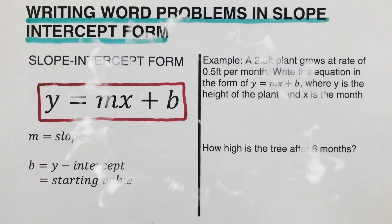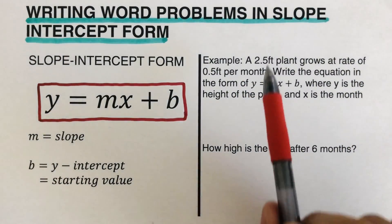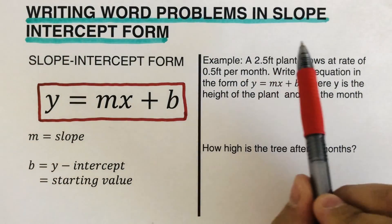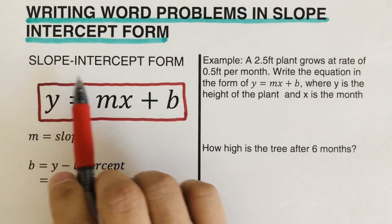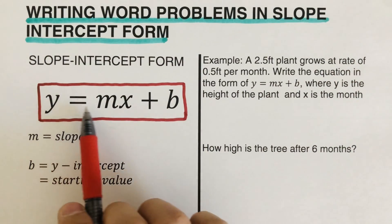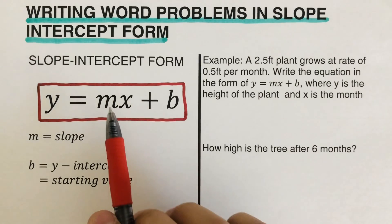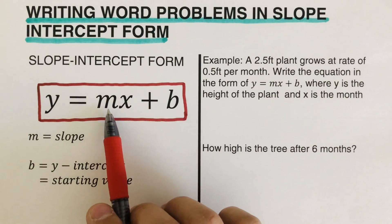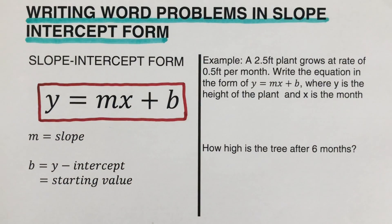Hello everyone! In this video, we are going to write word problems in slope-intercept form. Slope-intercept form is y equals mx plus b, where m stands for the slope. The other term for slope is the growth factor.